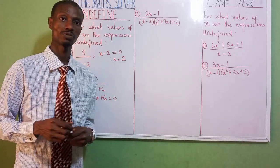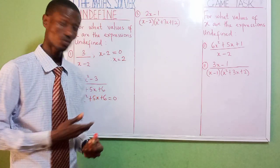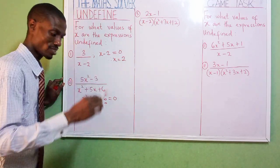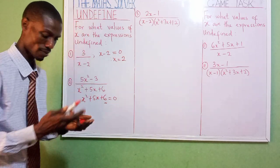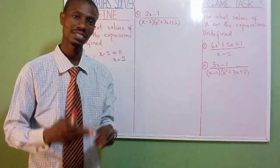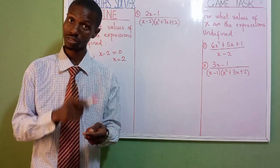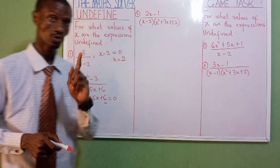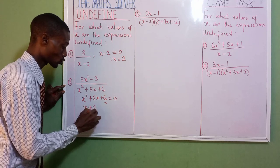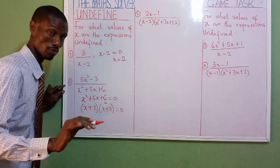This is a quadratic equation. I advise you to watch a previous video where we solved factorization. Let's use the factorization method. We think of two numbers that multiply together to give the last number and add together to give the middle number. Two numbers that multiply to give six: one and six give seven — we cannot use those. Two and three: two times three is six, two plus three is five — perfect. So we use two and three.